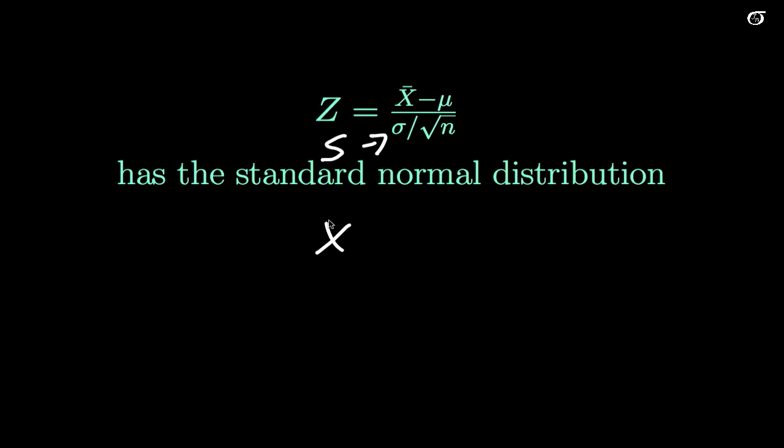So we've got a new statistic here that's going to look something like this: x bar minus mu over s over the square root of n, but something fundamental has changed here. We've replaced a known constant with a statistic, a statistic that has a sampling distribution.